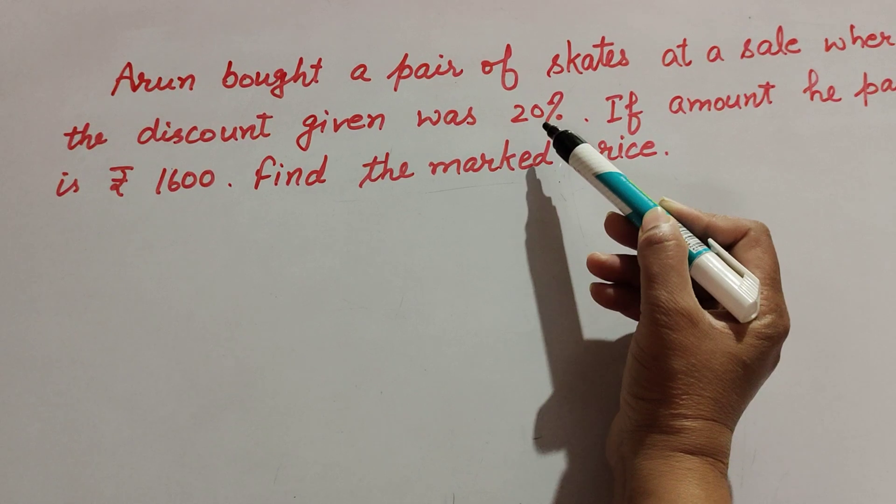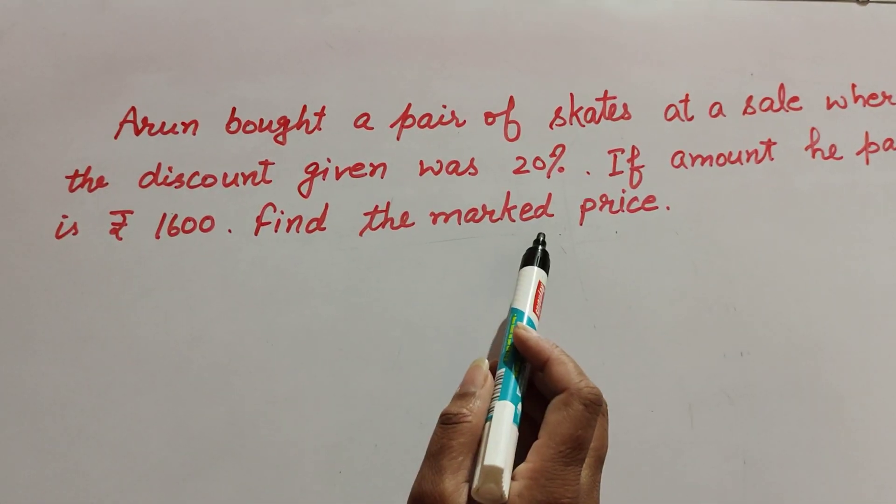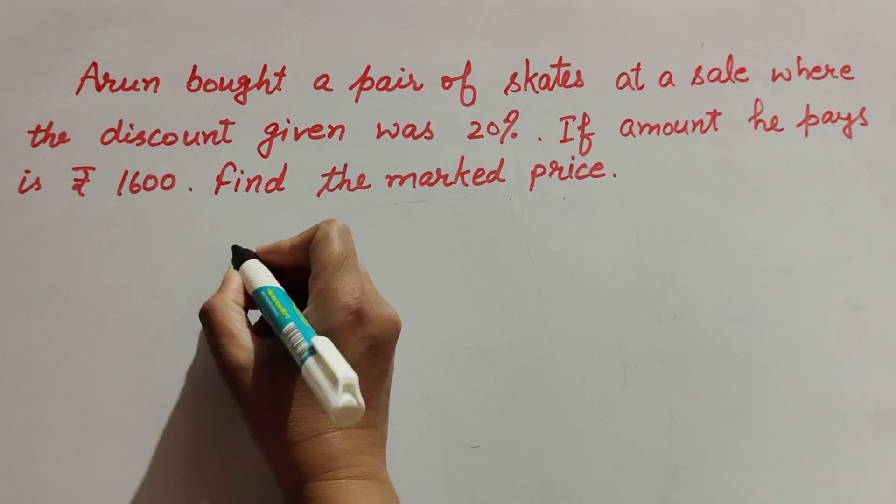A pair of skates is sold at 20% discount and he pays ₹1600. We need to find the marked price, so let's start.